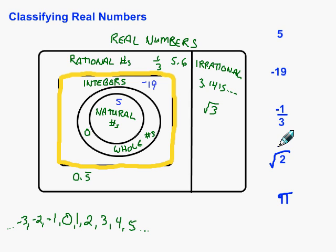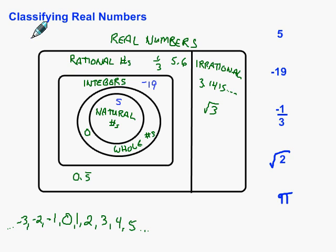So we've got negative 1 third, which is a rational number.